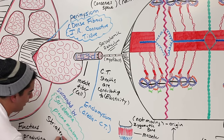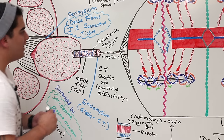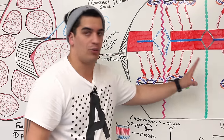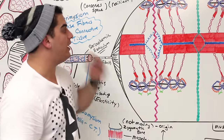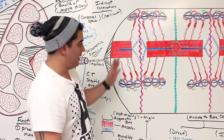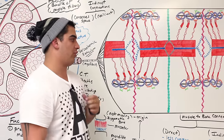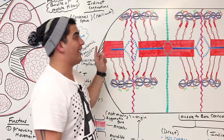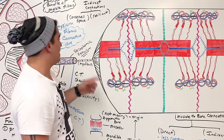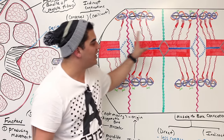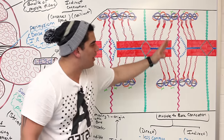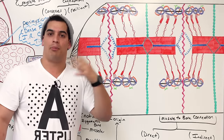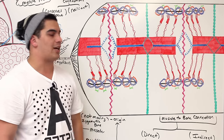Skeletal muscle fibers are cylindrical and multinucleated. They also have a striated appearance — a striped pattern. The functional and structural unit of the muscle cell is called the sarcomere, which we'll examine in detail in the next video covering the sarcomeric structure of myofibrils.